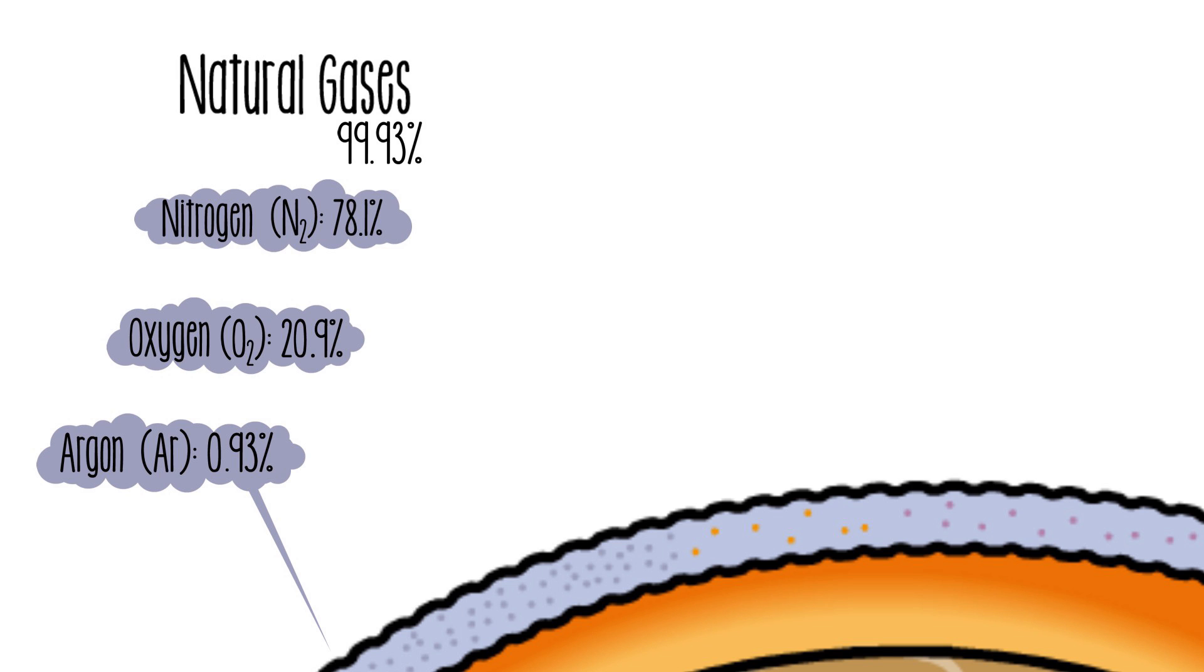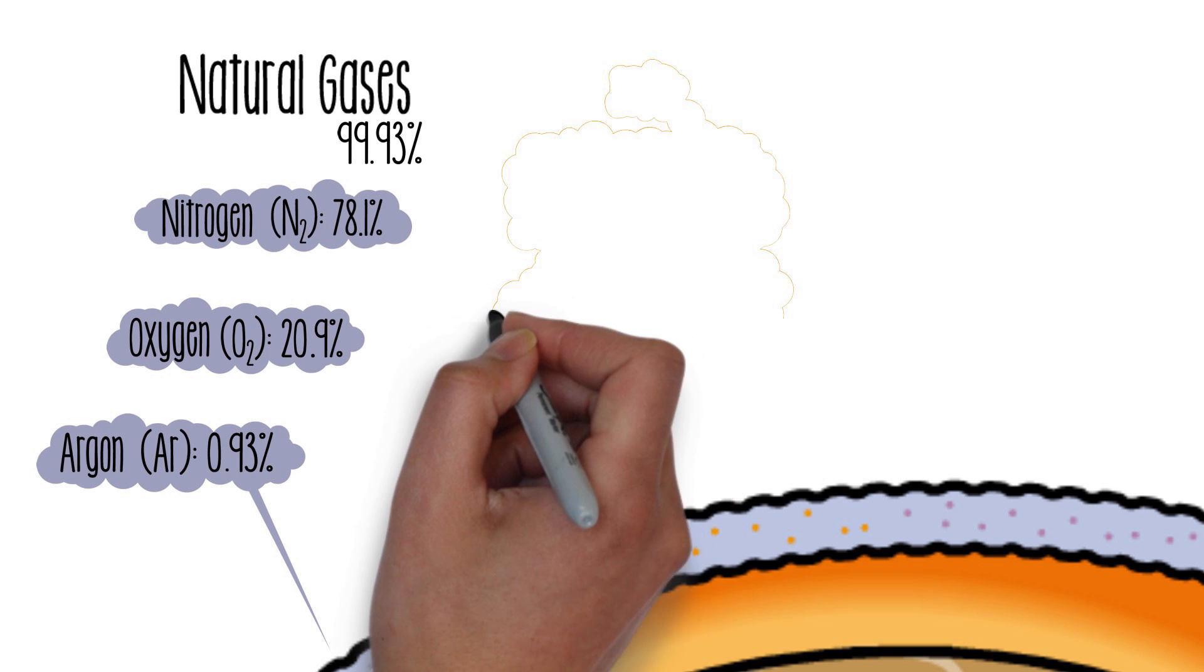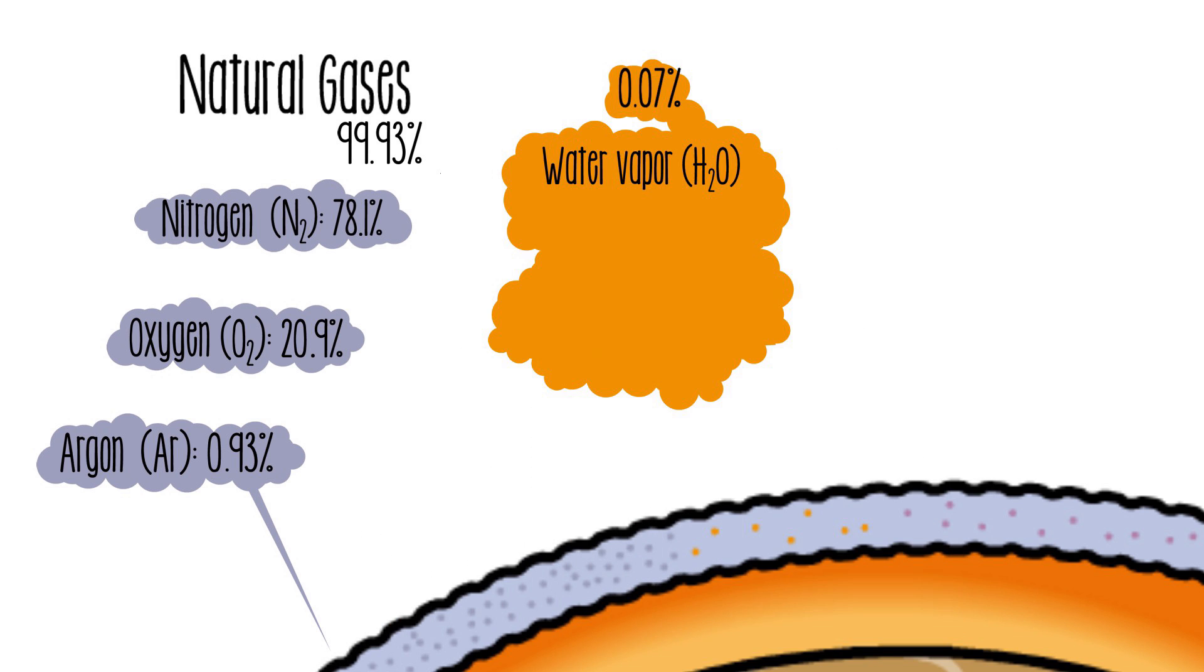The atmosphere is composed of various natural gases, of which nitrogen, oxygen and argon constitute 99.93%. However, there are other gases such as water vapor, carbon dioxide, methane, nitrous oxide and ozone, which have a greater impact on the greenhouse effect.